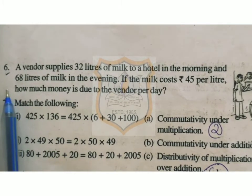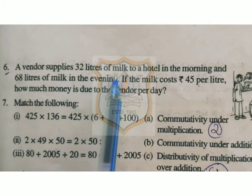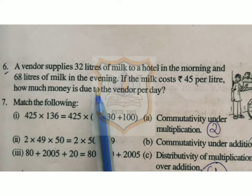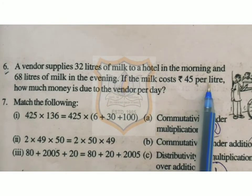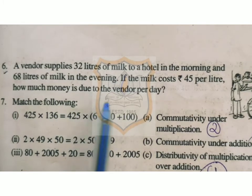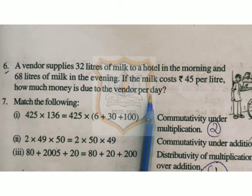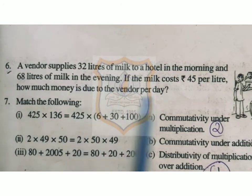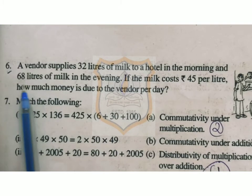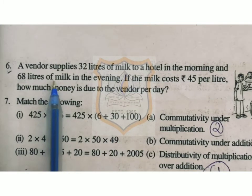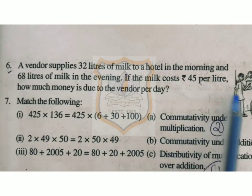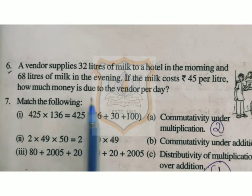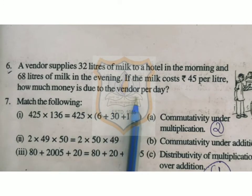Next is question number 6. A vendor supplies 32 litres of milk to a hotel in the morning and 68 litres of milk in the evening. If the milk costs Rs. 45 per litre, how much money is due to the vendor per day? Here, a vendor supplies 32 litres of milk in the morning and 68 litres in the evening, and the cost of milk is Rs. 45 per litre.